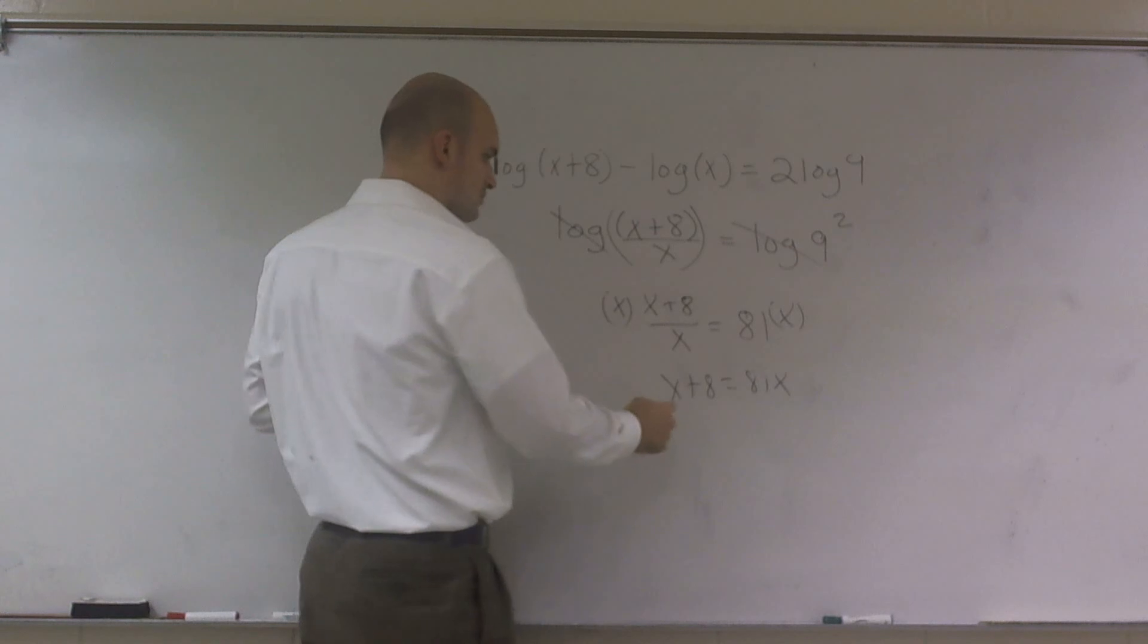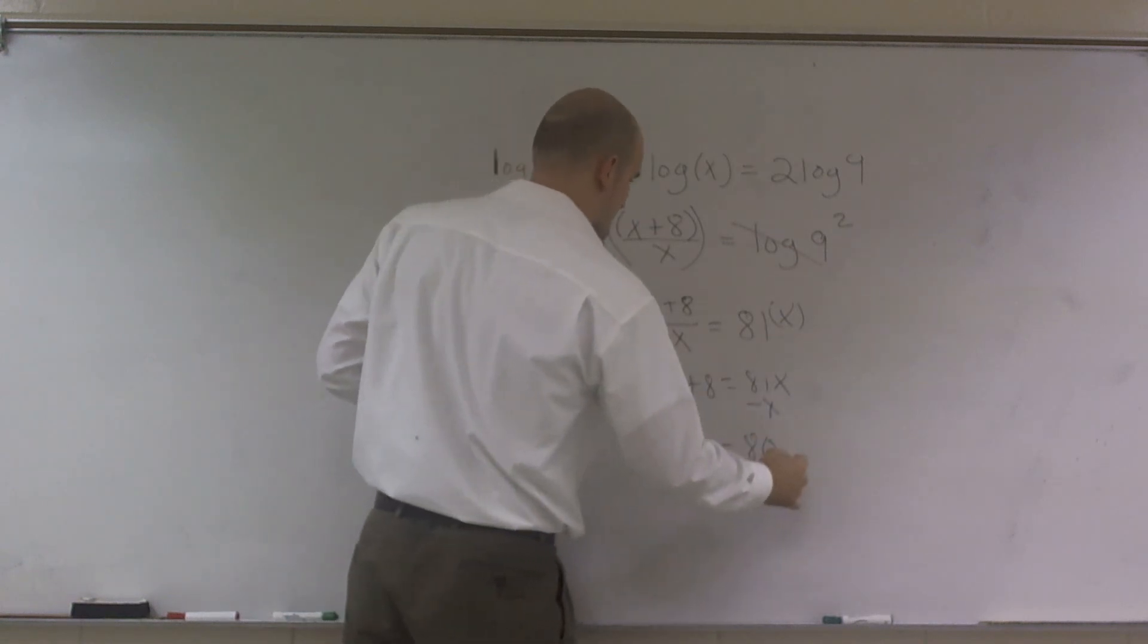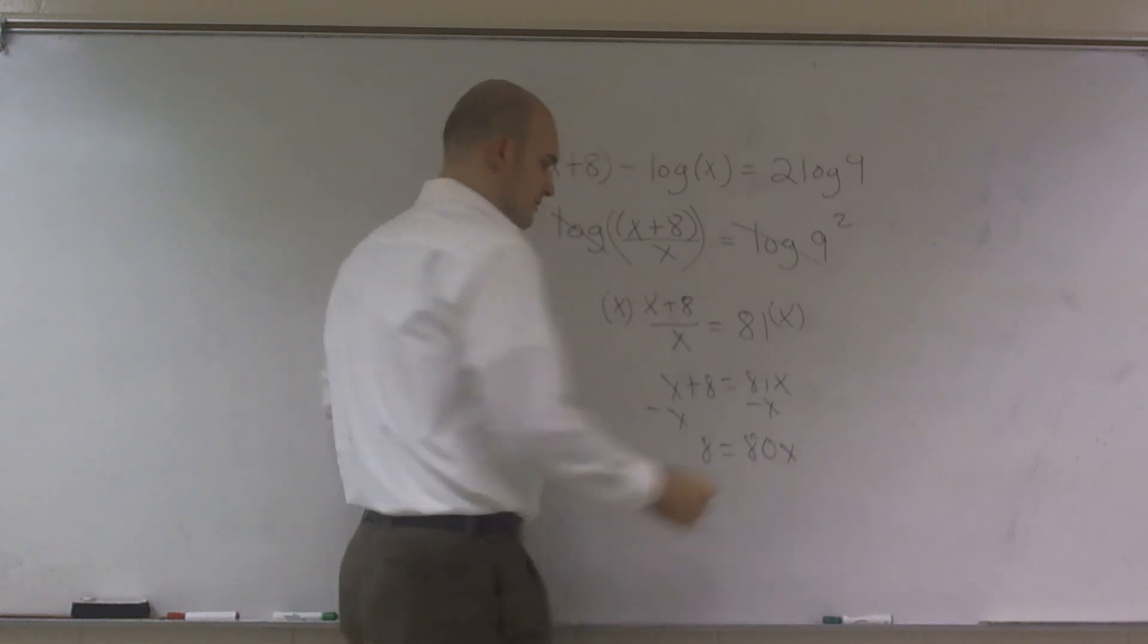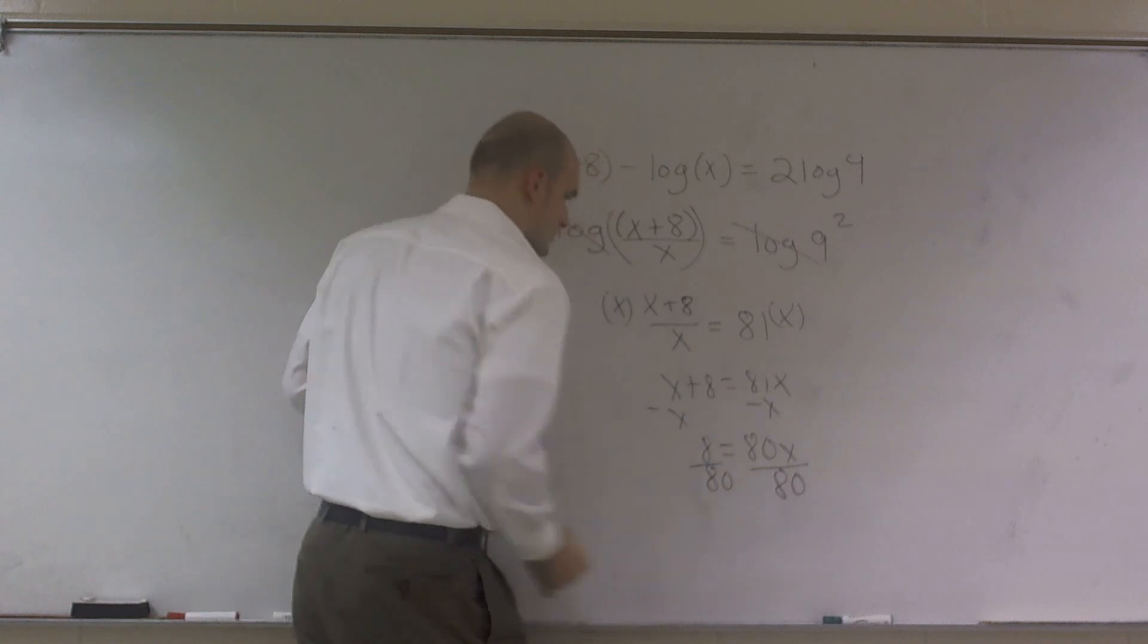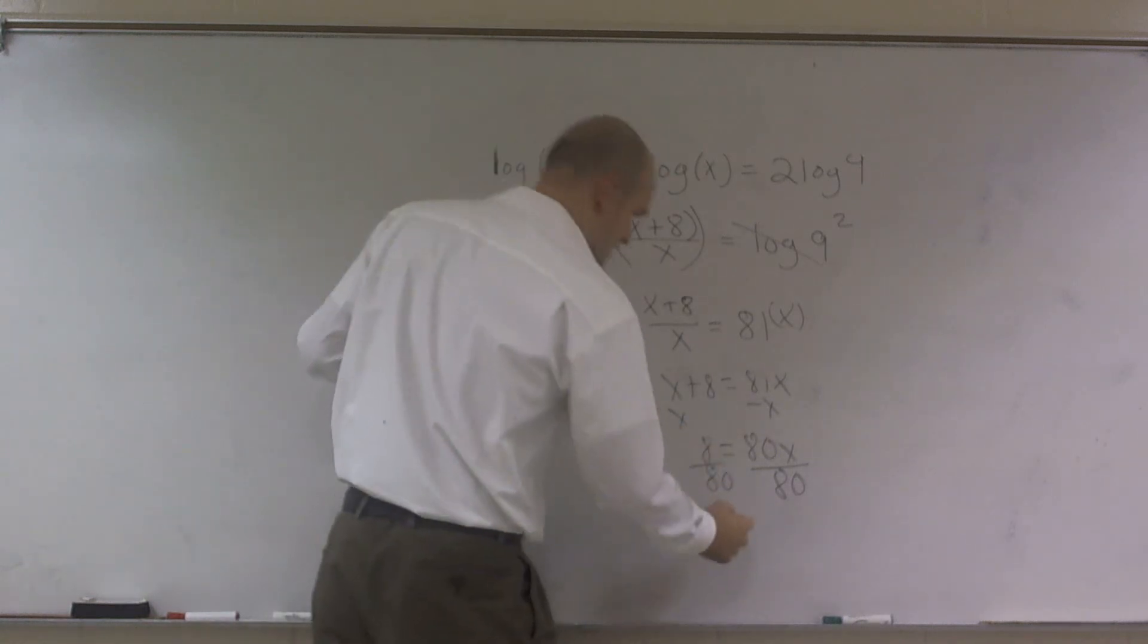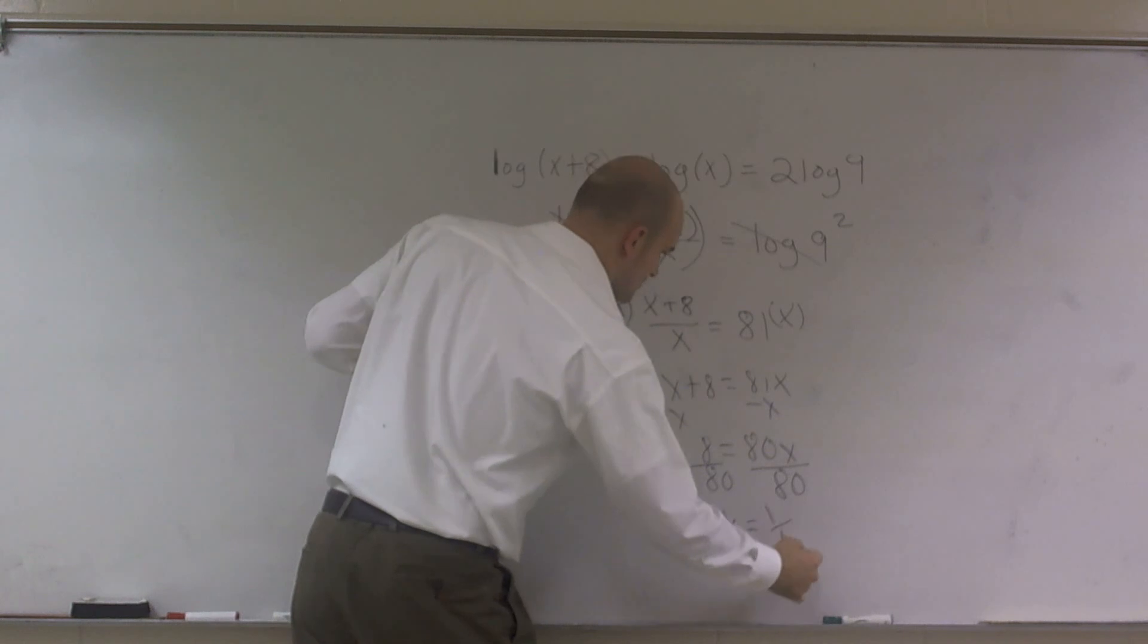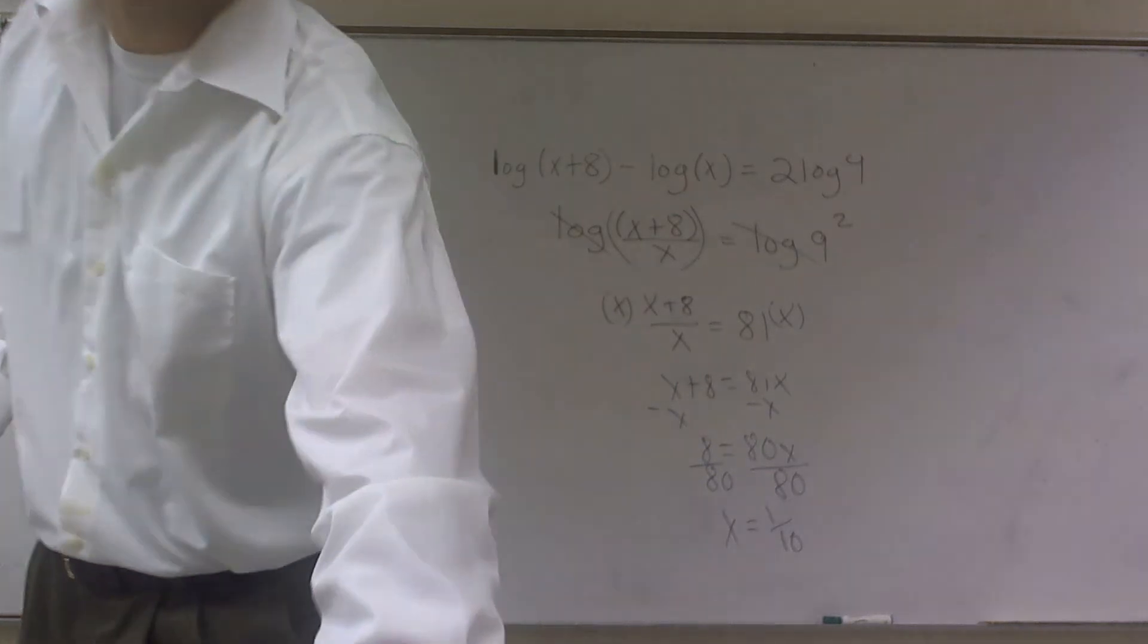I will subtract now an x, and I'll get 8 equals 80x. Then what I'll do is divide by 80, and then you can see you can divide the top and the bottom. So therefore, I have x equals 1/10. And that's how you solve logarithms. See you next time.